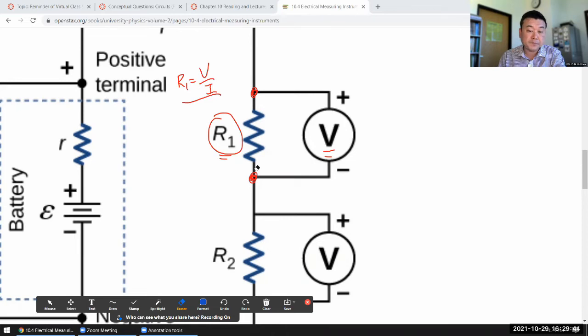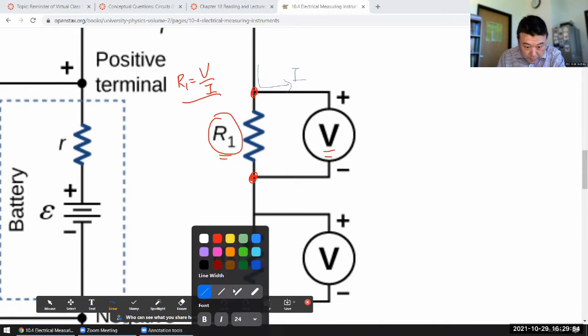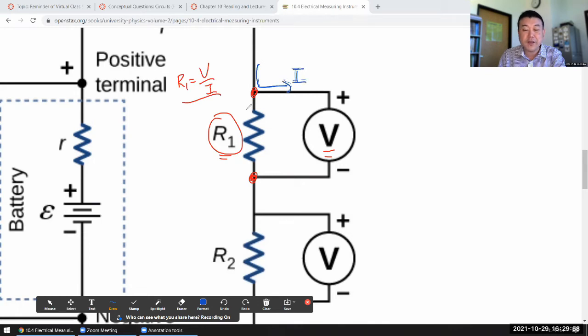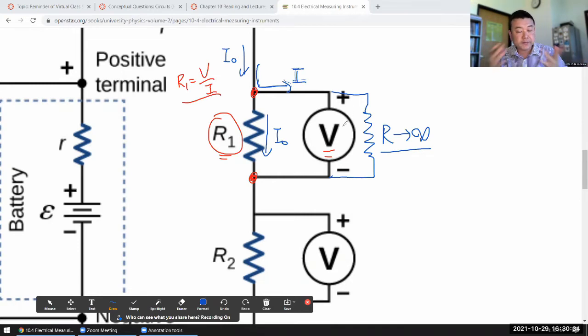How much current is going through this branch of the circuit? You would want to be able to say, we had some amount of current coming in, and I want all of it to continue to go through the resistor R1. I don't want any diverted away into something else. Then you should realize, I want basically infinite resistance here, R going to infinity.